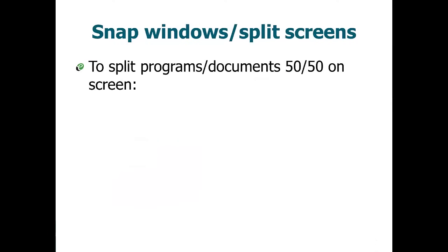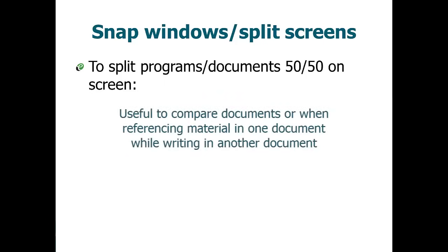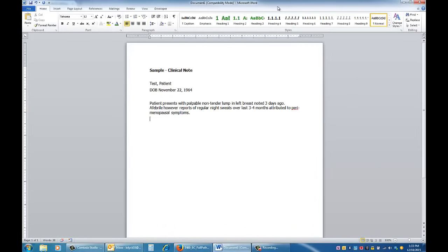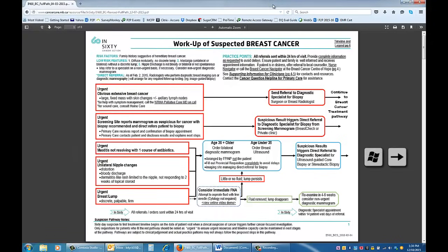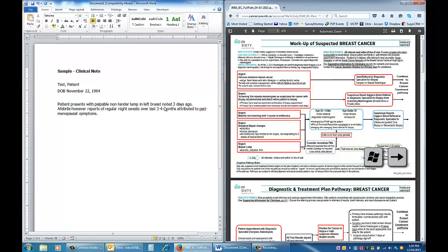Another great window feature to learn is how to split windows on your screen. You can easily split two windows so that they share the screen 50-50. This is very useful when comparing documents or when needing to reference material in one document when writing in another. Many EMRs allow this functionality so you could reference chart information, like medical history on one side of the screen, while creating a referral letter on the other side. To split screens, simply click in the taskbar at the top of the first window, then click the Windows key and the left or right arrow key. Repeat this process, clicking the taskbar in the other window and pressing Windows key and the other arrow key. You can work in each window independently simply by clicking your mouse into the window to begin. For those using Mac systems, there is similar functionality available which will vary depending on the device being used.